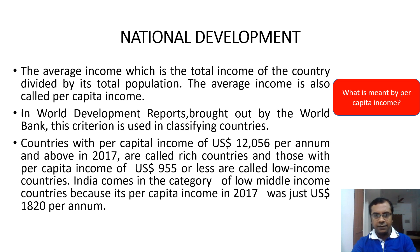above in 2017 are called rich countries, and those with per capita income of 955 US dollars or less are called low income countries. India comes in the category of low middle income countries because its per capita income as of 2017 was just 1,820 US dollars per annum.